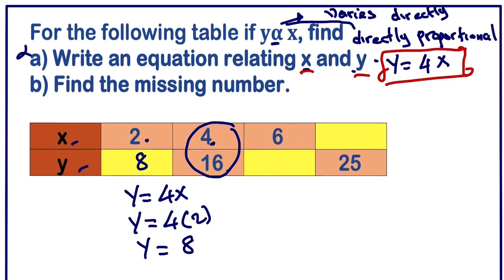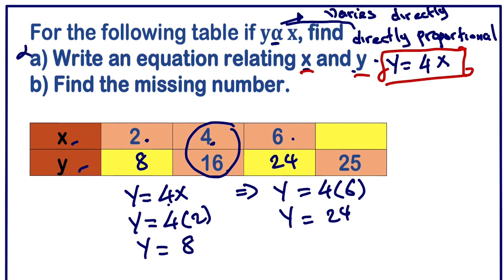Next, we still have x, so we follow the equation: y equals 4 times 6, so y equals 24. Next, we are going to look for x, because the unknown value is x. We have y given in the table, so using the formula: 25 equals 4x.